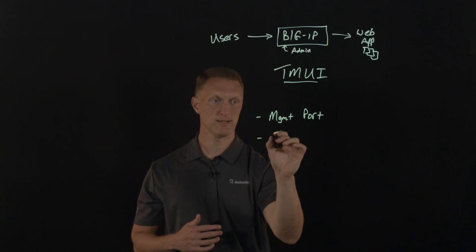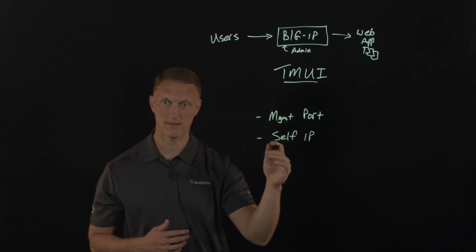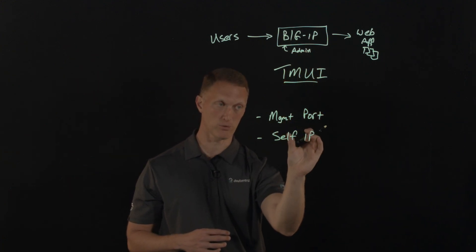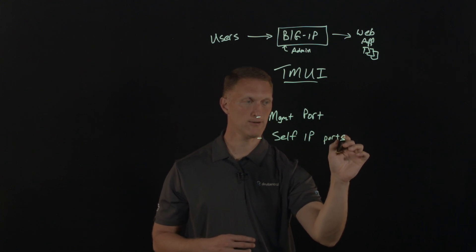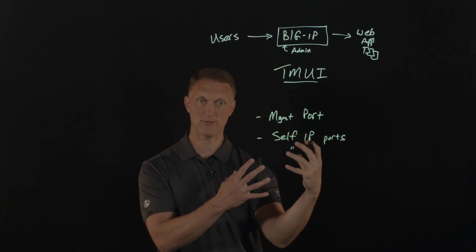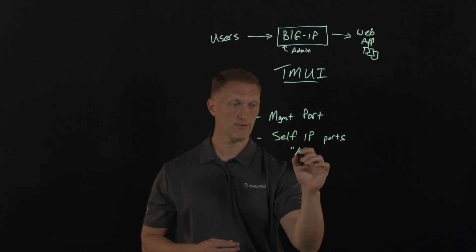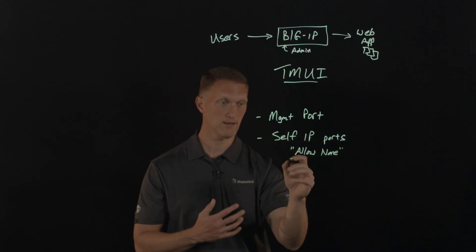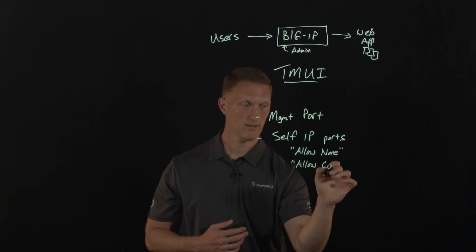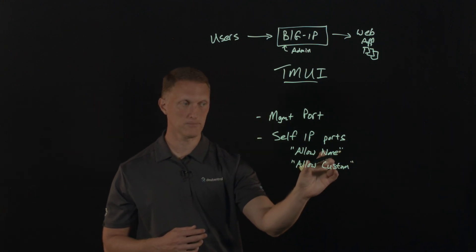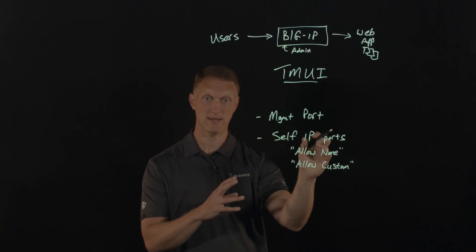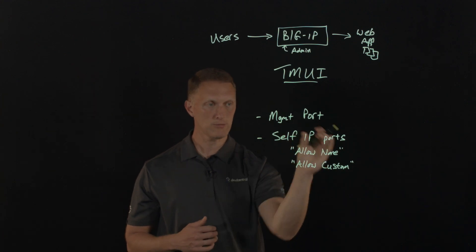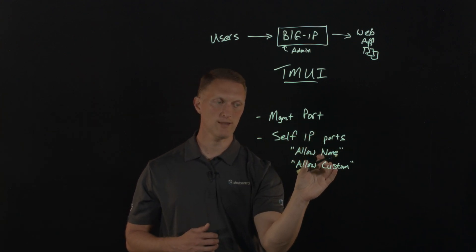The other thing I'll mention is Self IP lockdown. You need to block access to the configuration utility by locking down Self IP ports. When you go into each of your Self IPs, you can configure the Self IP and say 'Allow None' on port availability, or you can say 'Allow Custom.' We recommend that you just say 'Allow None' — don't allow any ports to be available via Self IP, so that it blocks access to the configuration utility. But if you need to open up ports for Self IP purposes, choose the 'Allow Custom' option.